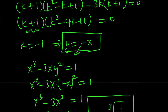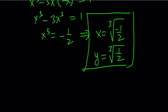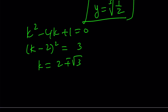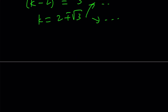The other solutions are also similar. For k squared minus 4k plus 1 equals 0, we can rewrite as k minus 2 squared equals 3. Taking the square root of both sides gives k equals 2 plus or minus the square root of 3. Then you proceed as before, finding the corresponding x value and then the y value. That basically covers the first approach.